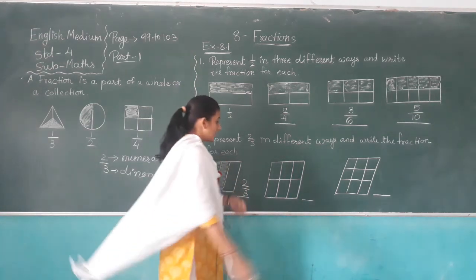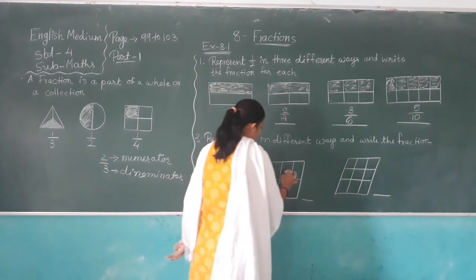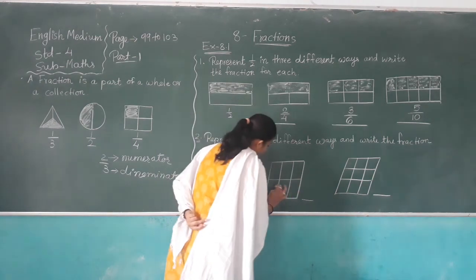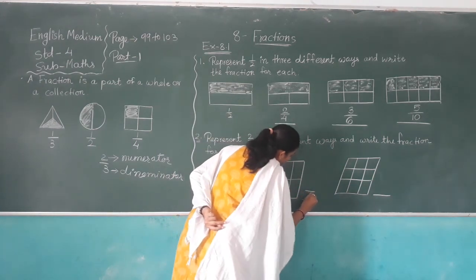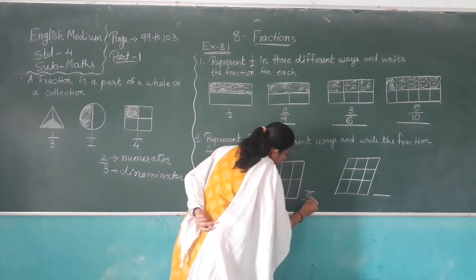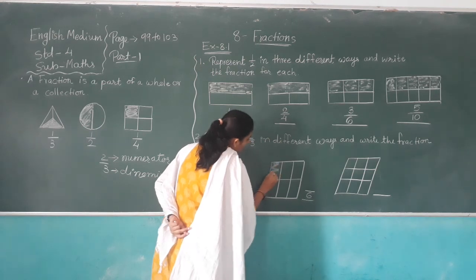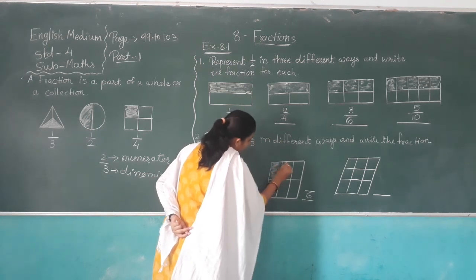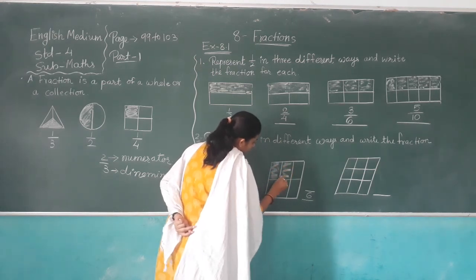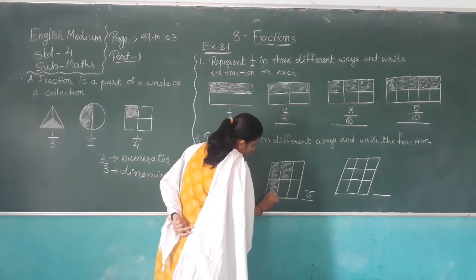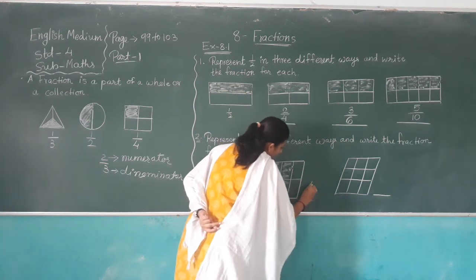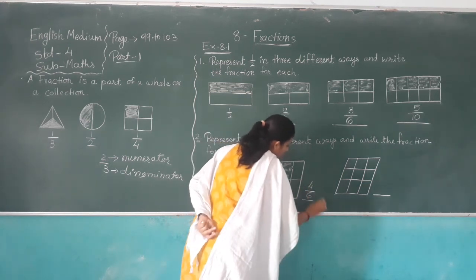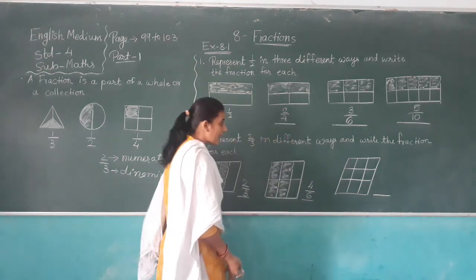Next: here there are one, two, three, four, five, and six parts. Six parts total, and four parts are shaded. It is called four out of six.